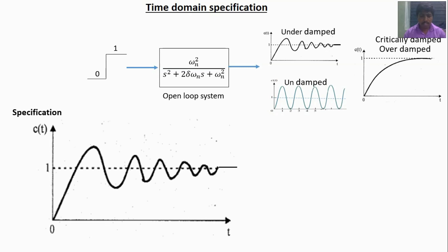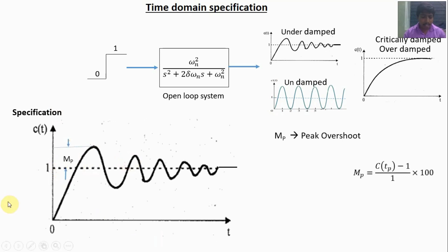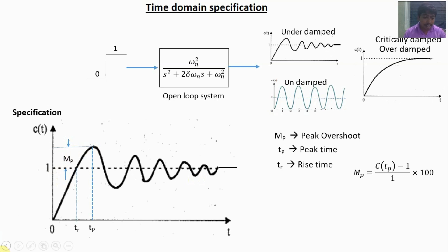The first specification is peak overshoot. Peak overshoot is defined as how much the output increases beyond the desired value. Since the desired value is 1, peak overshoot equals (peak value minus 1) divided by 1, expressed as a percentage. The second specification is peak time — the time taken to reach the peak value. The third specification is rise time — the time taken to reach the desired value for the very first time.